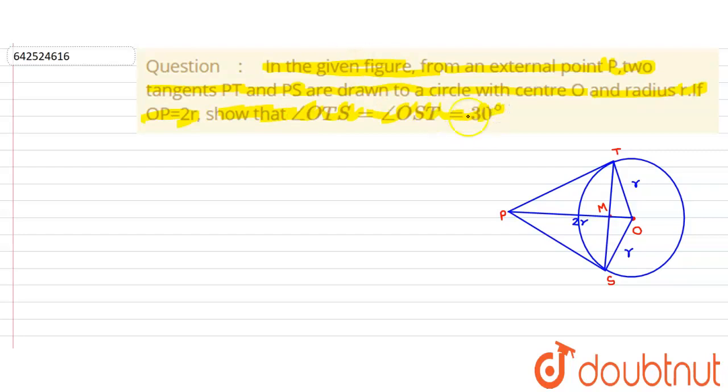So we are given a circle with center O as can be seen in the diagram, and there are two tangents PT and PS. The point of contact of these two tangents are T and S respectively. The radius is r and OP is also given to be 2r.